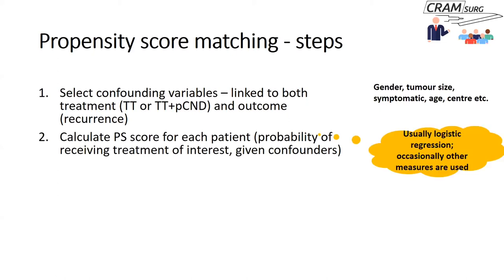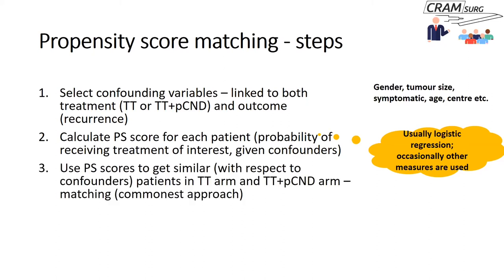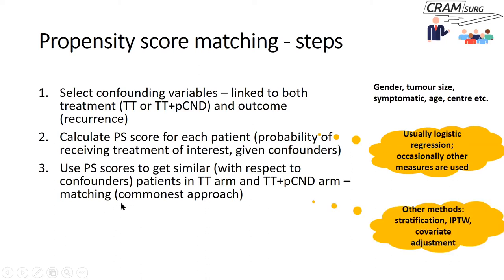This is usually done using logistic regression — predicting what treatment the patient had rather than predicting the outcome as in typical regression analysis. The next step is to use the propensity scores to get similar patients in the thyroidectomy arm and the neck dissection arm. The most common approach in surgical research is matching, although there are other methods with specific advantages in certain settings.